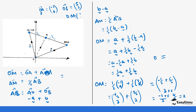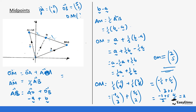So the answer for OM is (2, 5), since 3 plus 2 gives 5 for the y-component. That is our midpoint vector. I hope you've seen how we worked it out. You can pause the video and check each step one at a time until you arrive at the same answer.